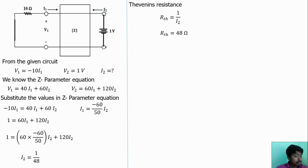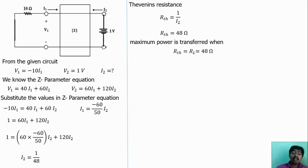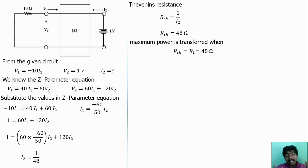We now know the Thevenin voltage (144 V) and the Thevenin resistance (48 Ω). Under the maximum power transfer condition, ZL = RTH. Therefore, the load impedance ZL = 48 Ω, and maximum power will be transferred at this value.